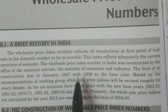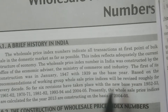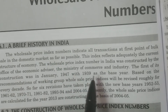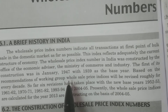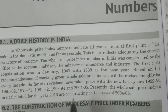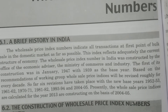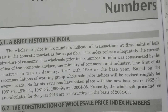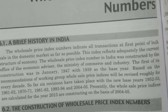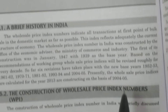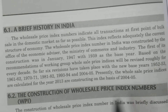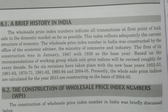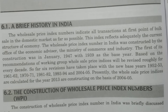The Wholesale Price Index numbers in India were constructed by the Office of the Economic Advisor, Ministry of Commerce and Industry. The first index was constructed in 1947 with 1939 as the base year. The Wholesale Price Index is revised every decade. Presently, the index numbers are calculated for the year 2013, constructed based on the base year 2004-05. This is a brief history of the Wholesale Price Index number in India.